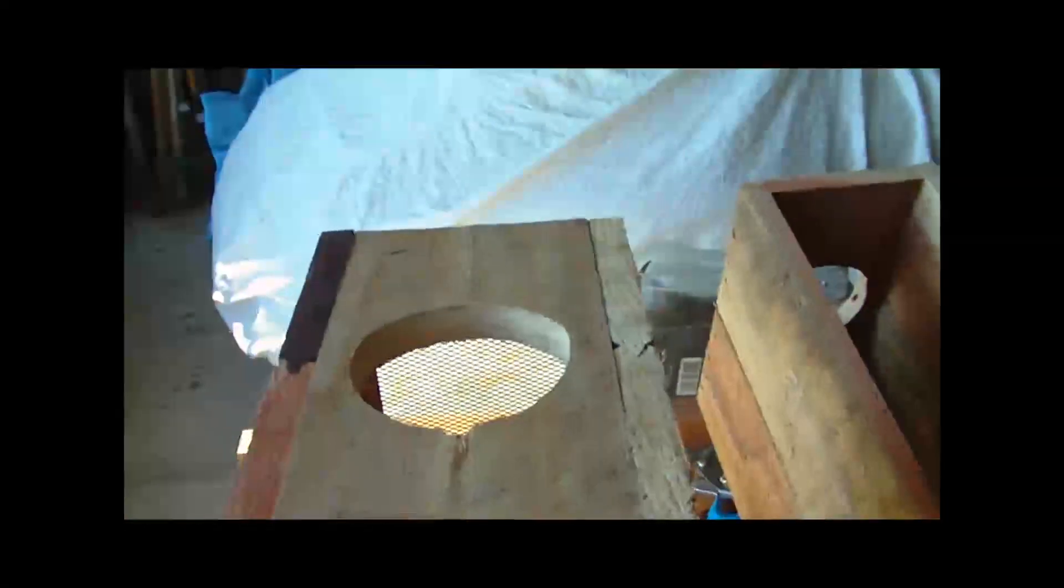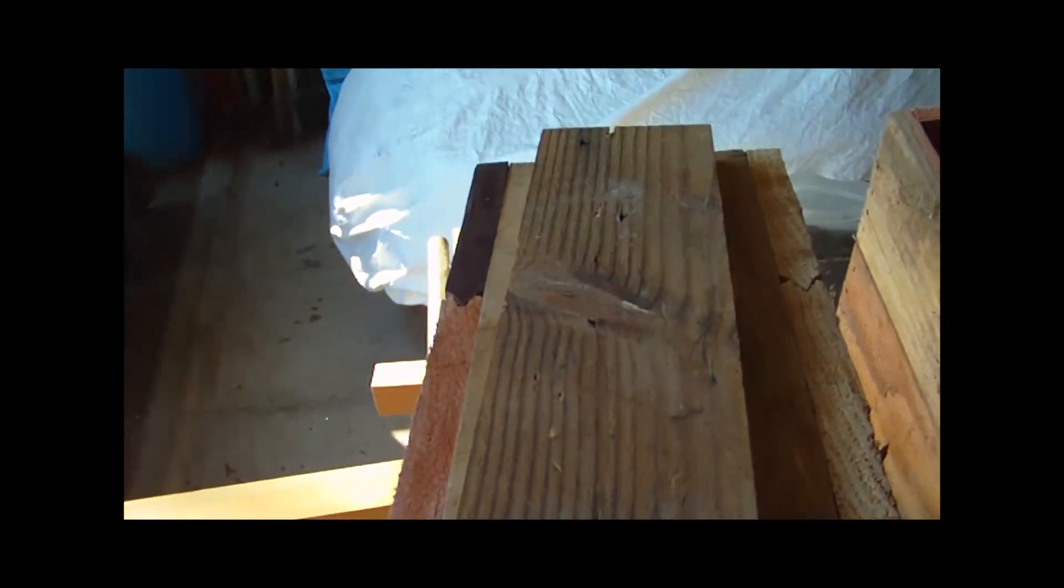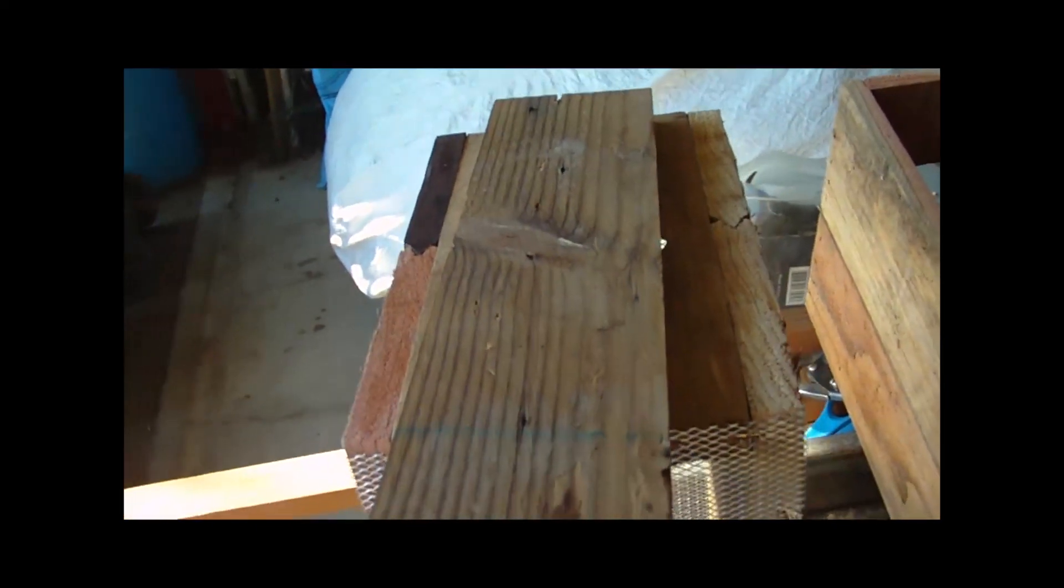The tuna fish would go down in here, and the Yellow Jackets are going to fly up through the cone and get caught in this box. There's a hole in the top here that would have a board or a brick over it to block it off. And when the Yellow Jackets have filled it up and died, you can pour it out.